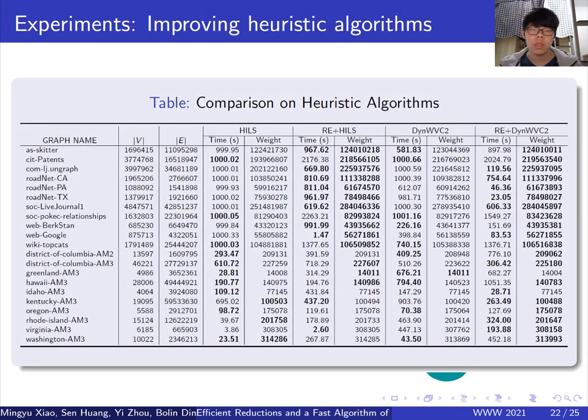This experiment shows how our reduction algorithm can improve heuristic algorithms. We run the heuristic algorithms on the original instance and the kernel for comparison. The time limit of heuristic algorithms is one thousand seconds. Note that, for the heuristic algorithms combined with reduction, the time to get the best solution is the total time of reduction and heuristic algorithms. The heuristic algorithms combined with our reduction produce higher-quality solutions using less time on most instances.